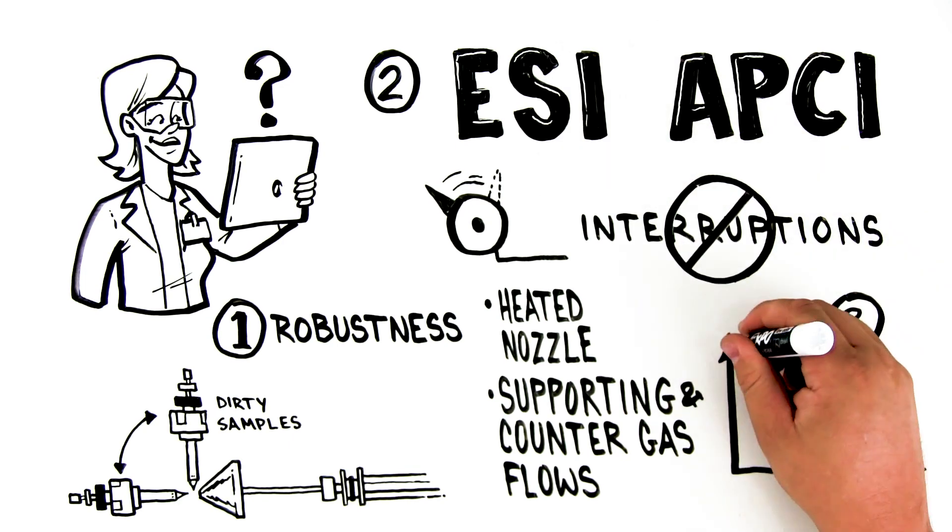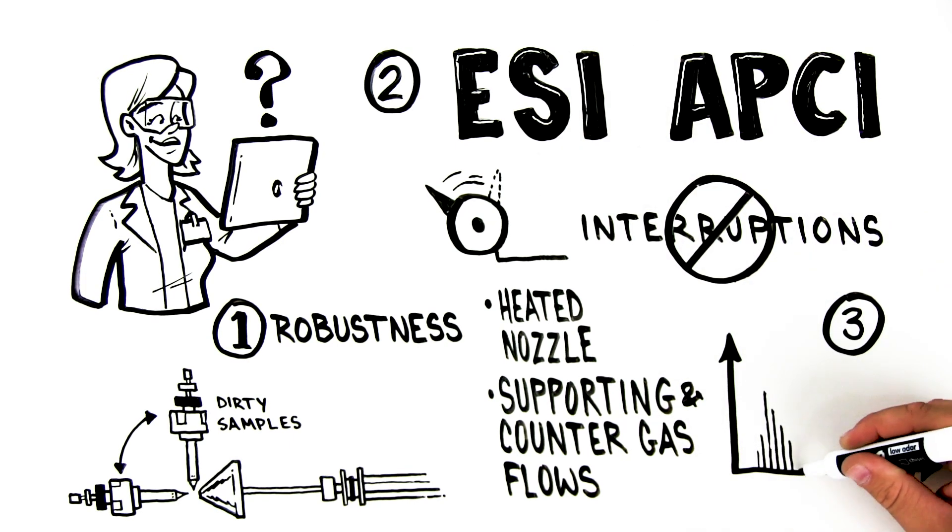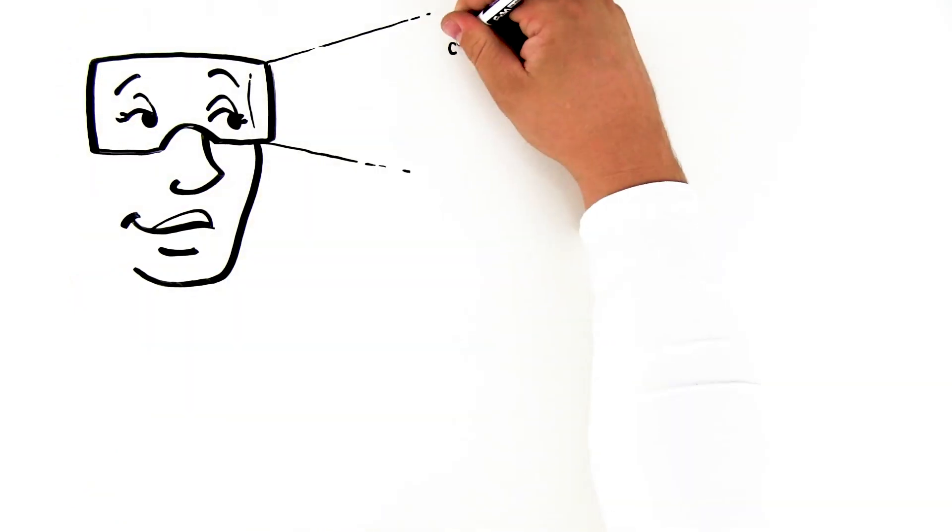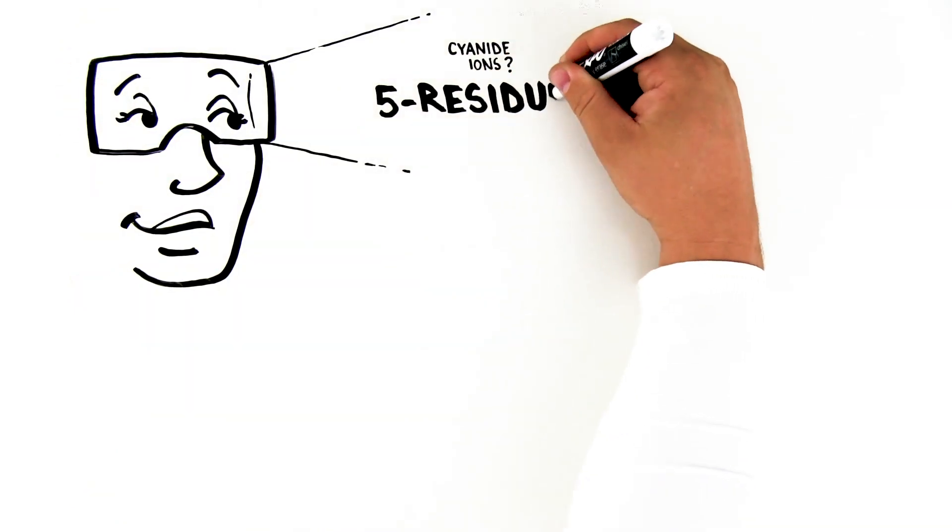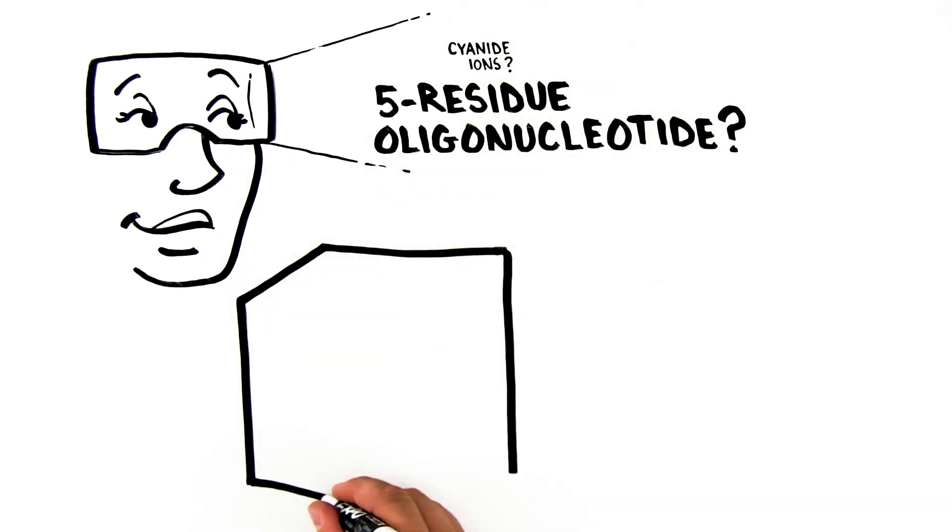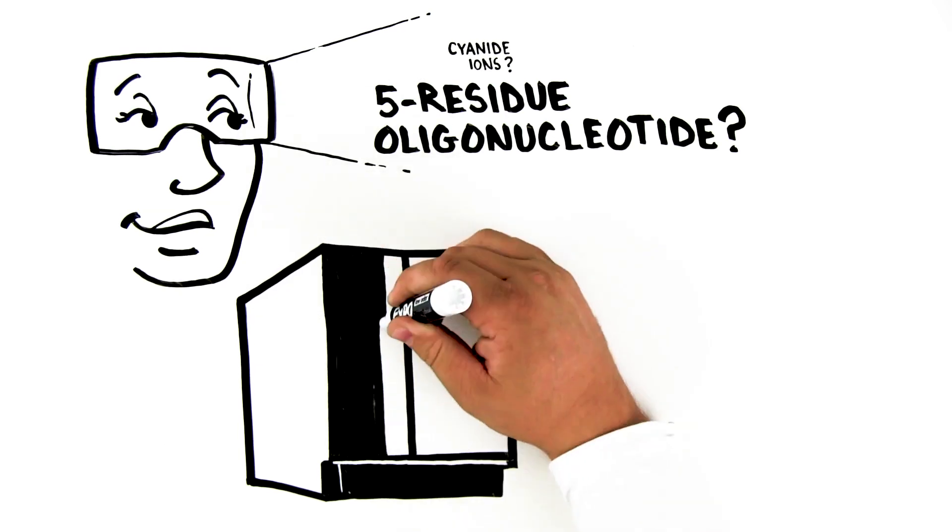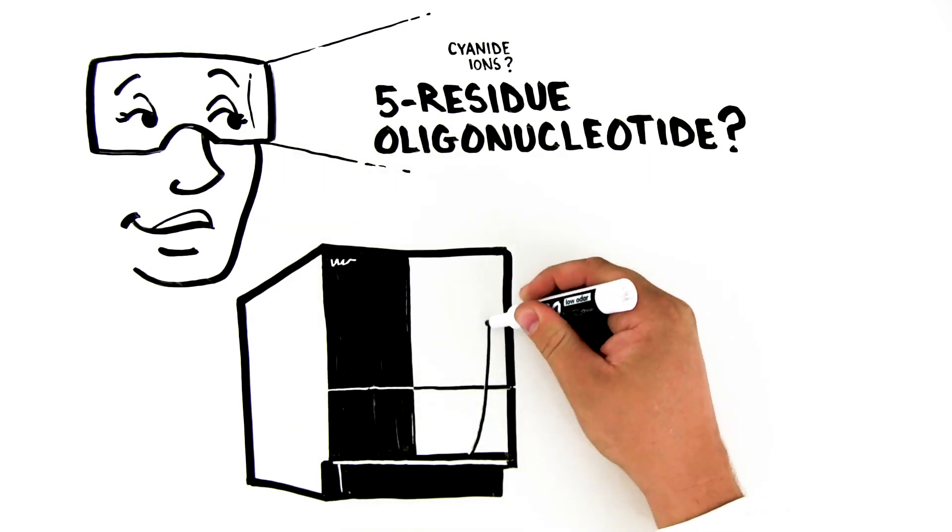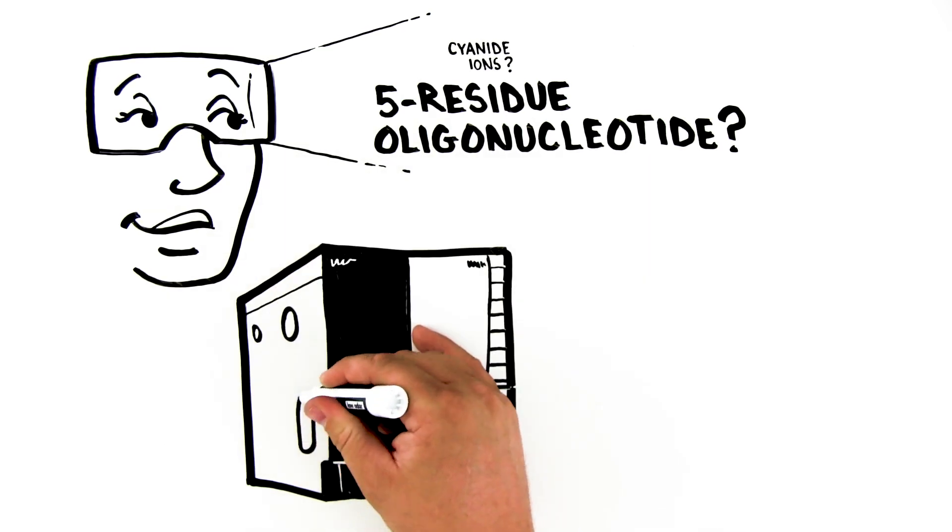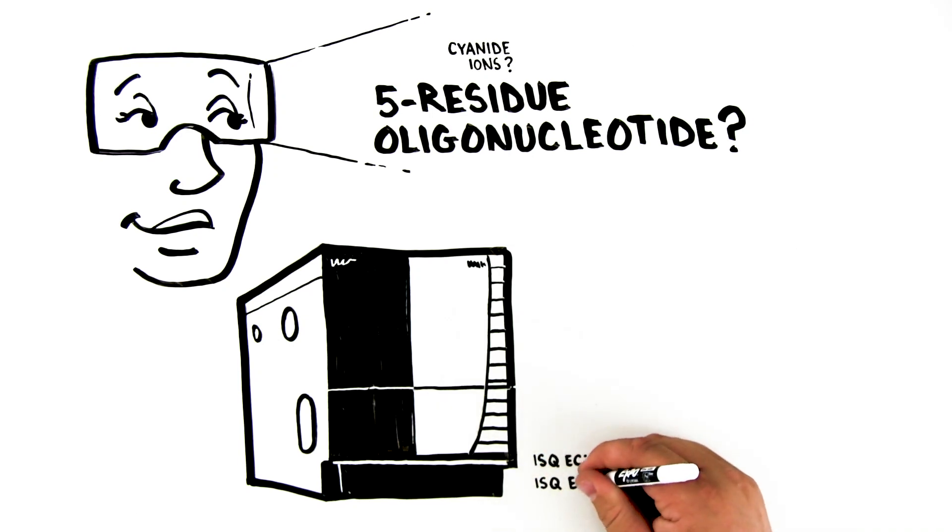Third, the mass range also impacts what ions can be seen. Can Jenny see both cyanide ions and a 5-residue oligonucleotide? The Thermoscientific ISQ-EC mass spectrometer has a mass range from Mz 10 to 1250, while the ISQ-EM extends this to Mz 2000.